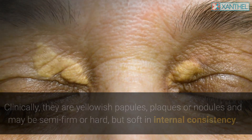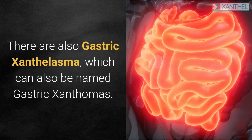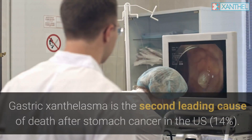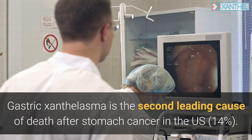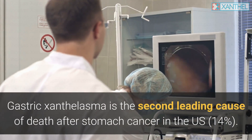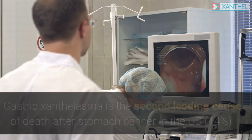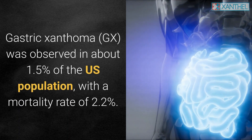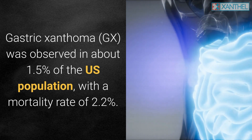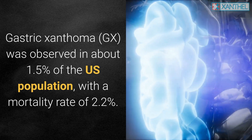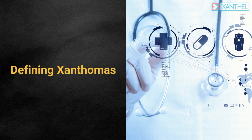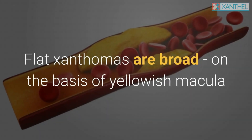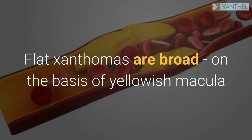Clinically, xanthalasma lesions are yellowish papules, plaques, or nodules and may be semi-firm or hard but soft in internal consistency. There are also gastric xanthalasma, which can also be named gastric xanthomas. Gastric xanthoma (GX) is the second leading cause of death after stomach cancer in the U.S., observed in about 1.5% of the U.S. population with a mortality rate of 2.2%.